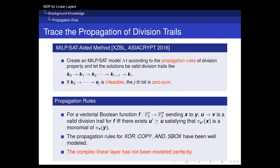To model the propagation of the division trials, the propagation rules between k₀ to k₁, k₁ to k₂ are very important. For the conventional bit-based division property, the propagation rules can be summarized as follows: u can propagate to v if and only if there exists u' greater than or equal to u such that this formula is a monomial of this formula. Before our paper, the propagation rules for XOR, copy, and S-box had been well modeled in previous papers. However, complex linear layers had not been modeled perfectly.